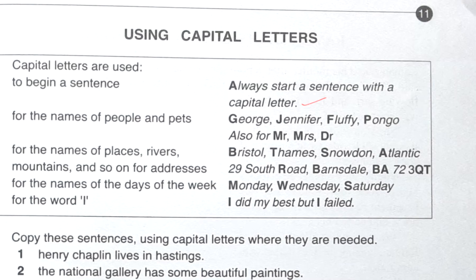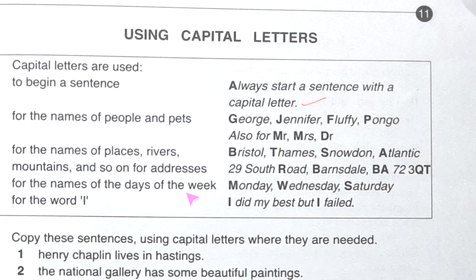For the names of people and pets — the same thing — like George, Jennifer, Fluffy, Pongo. Also for Mr., Mrs., and Doctor. For the names of places, rivers — Bristol, Thames, Snowdon, Atlantic, mountains, and so on. For addresses — 29 South Road, Burnsdale, BA7 2 3QT. For the names of the days of the week — like Monday, Wednesday, Saturday.